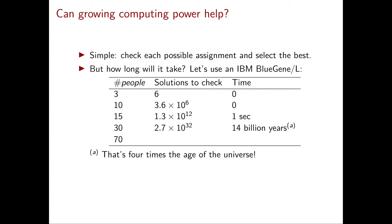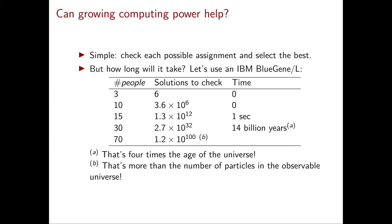In our original problem we had 70 people and 70 jobs. In this case, the number of solutions to check is 10 to the 100, which is more than the number of particles in the observable universe. I hope I have convinced you that we really need to study optimization — not only in problems that are clearly complex, but also in problems like this one which seem easy at first glance but turn out to be very difficult to solve in practice.